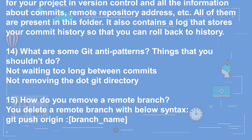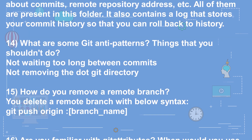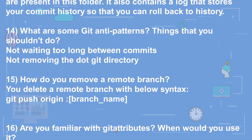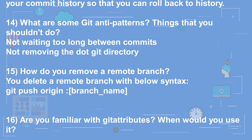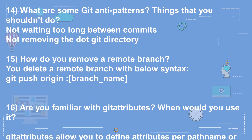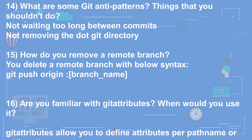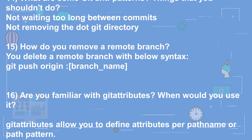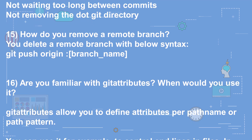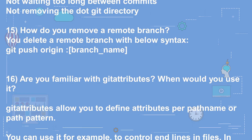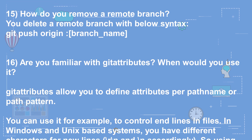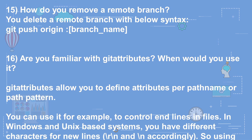Question 14: What are some git anti-patterns — things you shouldn't do? Answer: Not waiting too long between commits, and not removing the .git directory. Question 15: How do you remove a remote branch? Answer: git push origin --delete branch_name.